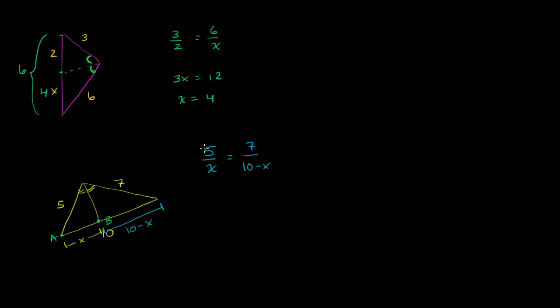And we can cross multiply. 5 times 10 minus x is 50 minus 5x, and then x times 7 is equal to 7x. Add 5x to both sides of this equation, you get 50 is equal to 12x. We can divide both sides by 12, and we get 50 over 12 is equal to x. And we can reduce this.